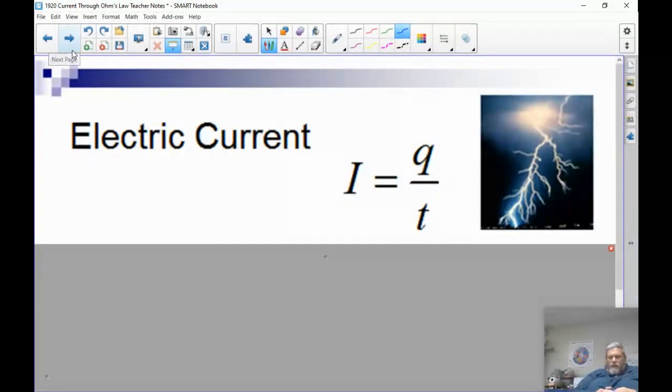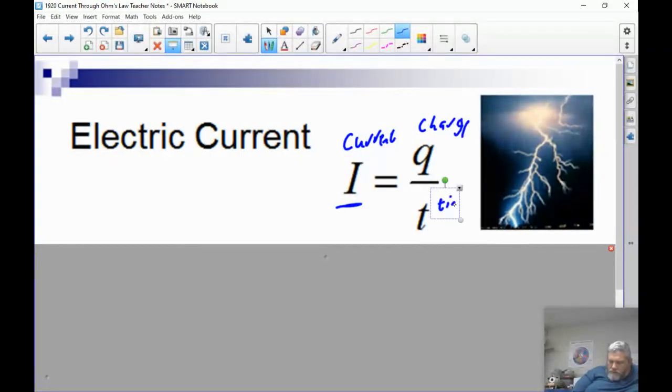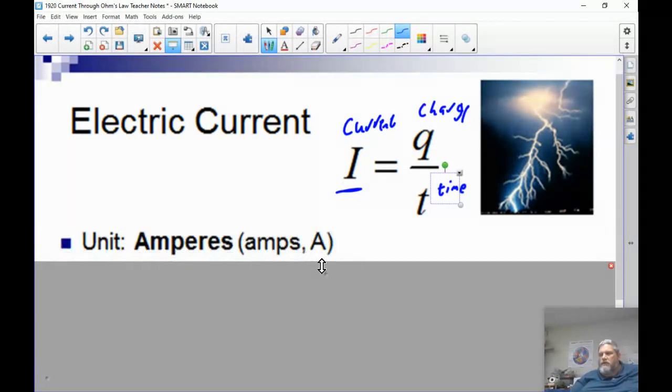Now we're going to talk about current. When we calculate current, current is represented by the letter I. Why they chose the letter I, don't know. C was taken, I guess. But I is current, Q is charge, and T is time. So current is just the charge per time, how many coulombs per second of charge moves through. The unit is in coulombs per second, C over S, and they give it a new name called the ampere, named after French physicist André Ampere. But you're probably more familiar with it being called amps. Usually we just abbreviate it with the letter A.